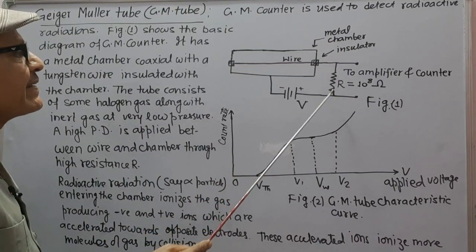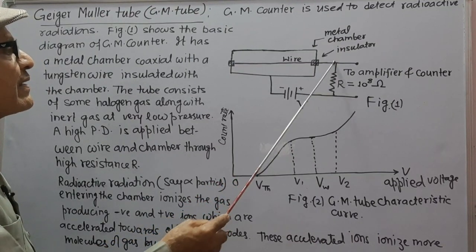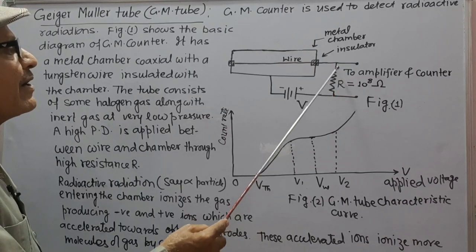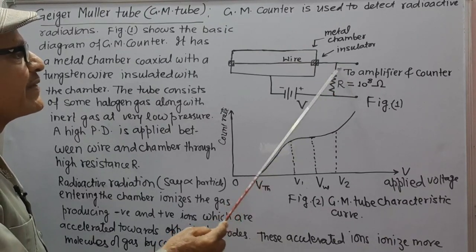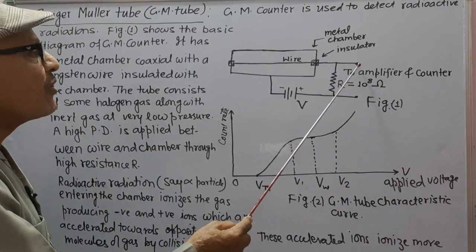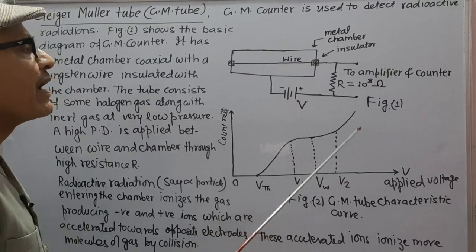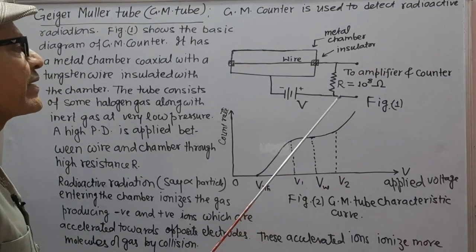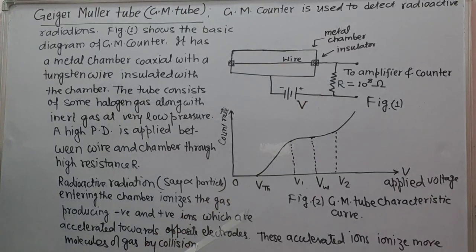A pulsating current passes through the resistance which produces a potential difference, which is then fed to the amplifier and then counter. The counter registers each entering particle in the form of a pulse.